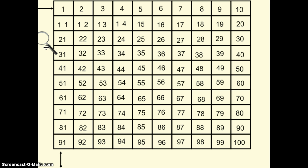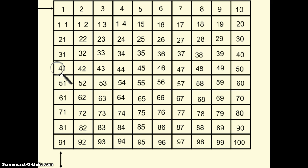When I look at the tens place in my column, I notice that the tens place is always increasing by one. There is no number in the tens place here because one is a single digit. But as I move down my column, my tens place increases by one — one, two, three, four, five, six, seven, eight, nine.